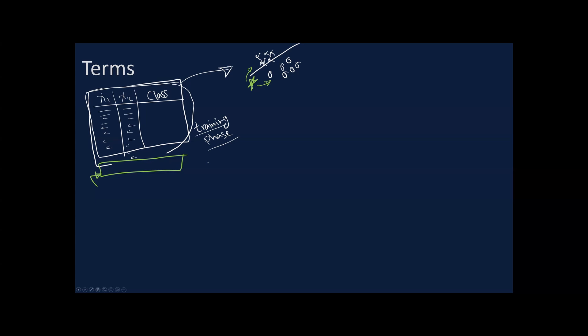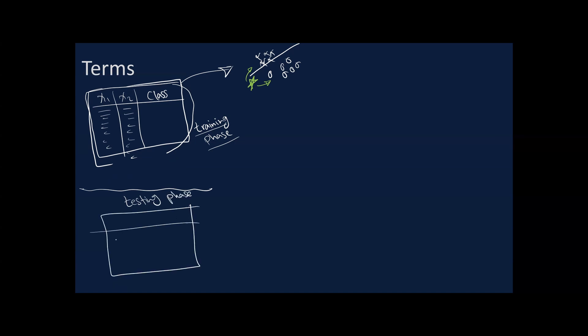We call this the training phase because you are training your classifier model. You have data samples for which you know the true label, and you are trying to train your model to adapt to this kind of data. The other phase is the testing phase — the part when you plug in samples you don't know the true identity of, and you test your classifier to know how well it is doing.